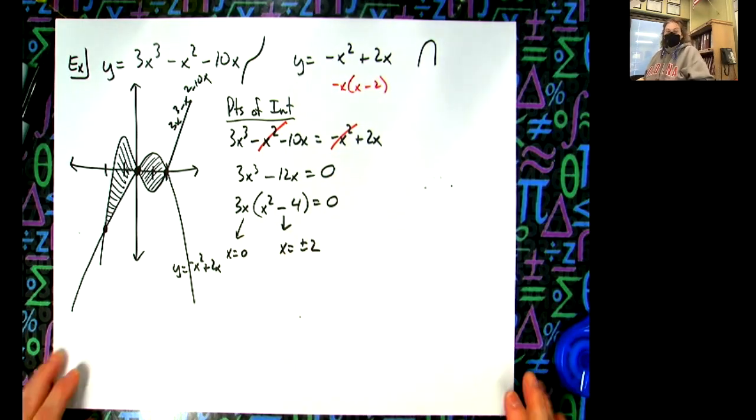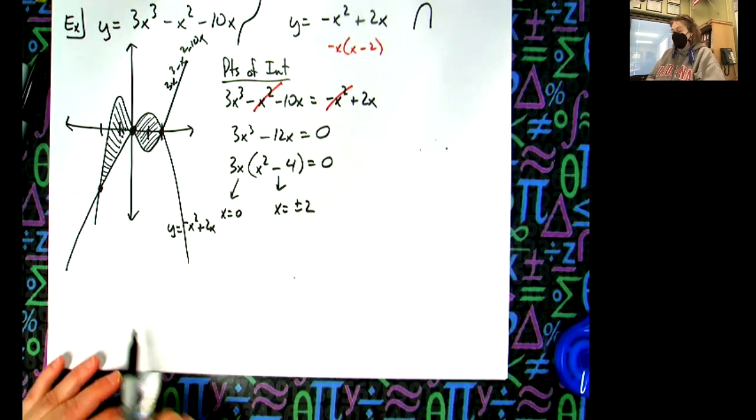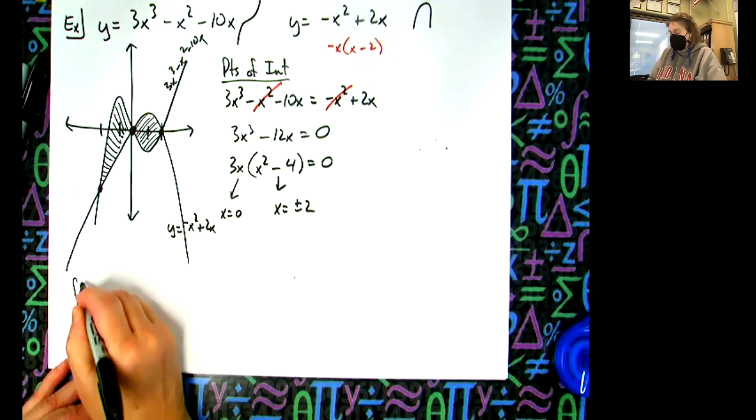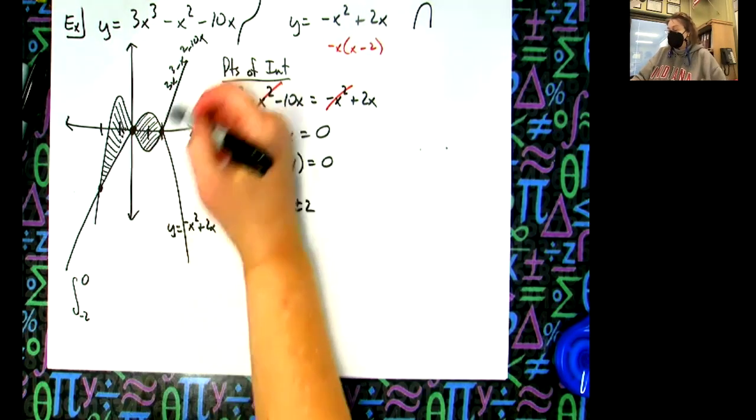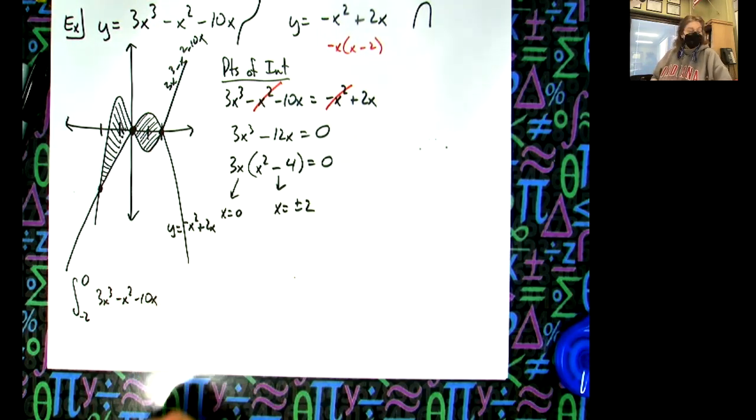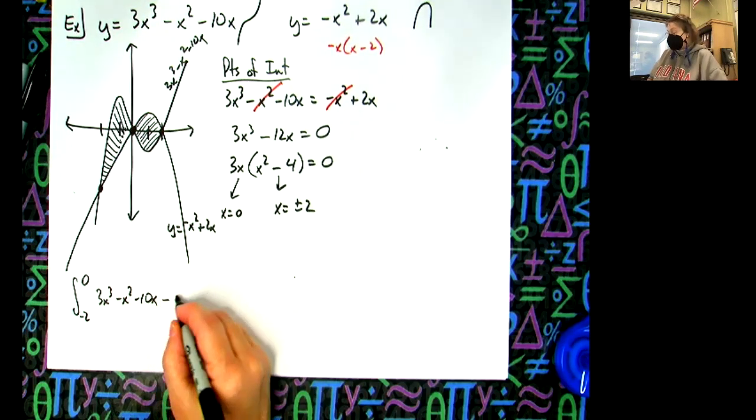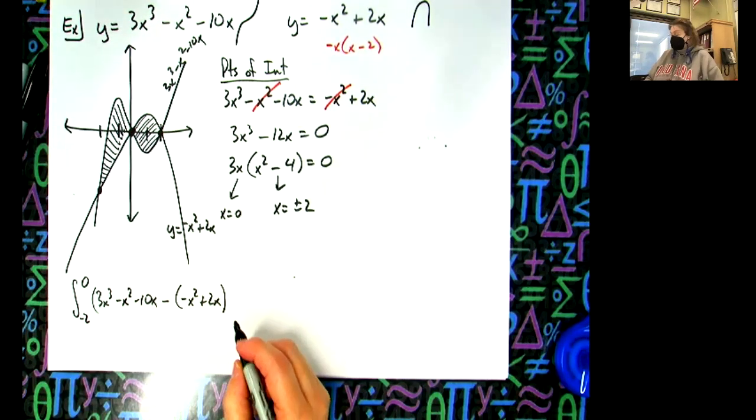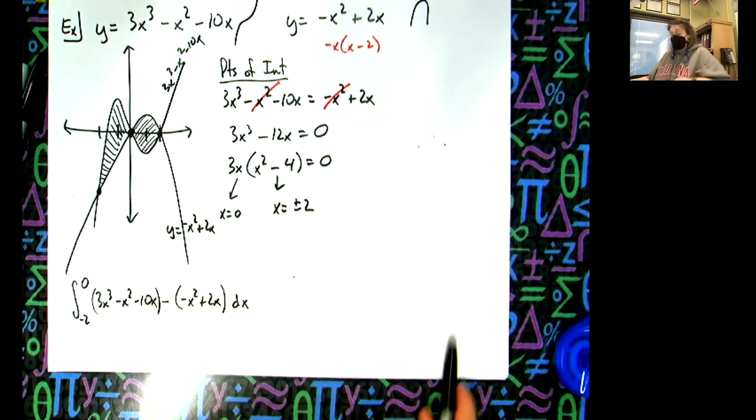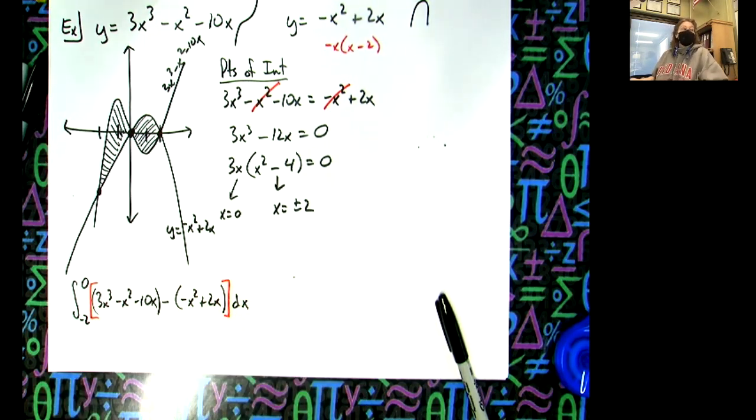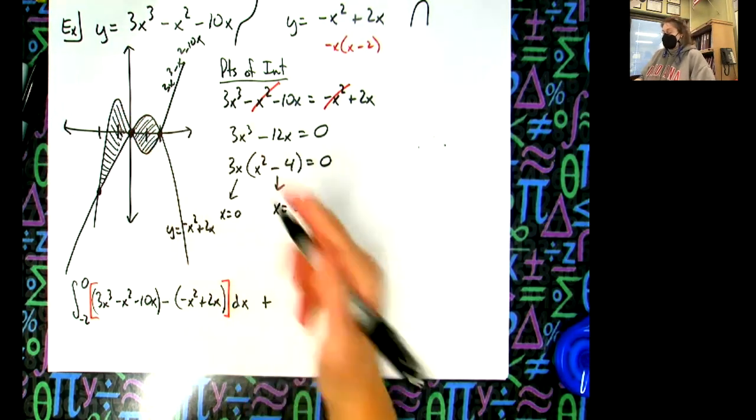All right, so let's set up an integral. We're not going to work out the integral, but let's set it up. Let's run the integral from -2 to 0 for our first one. We said the top curve is the cubic, so 3x³ - x² - 10x, and then we're going to subtract the -x² + 2x. And then technically it'd probably be a good idea to put those square brackets in.